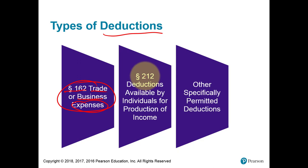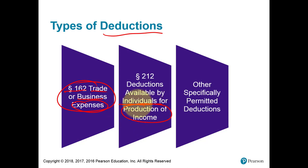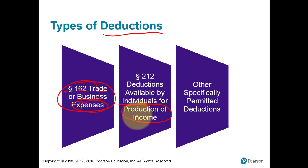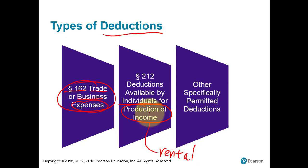The second group under a different Internal Revenue Code section is called deductions for the production of income, and this only applies to individuals like you and me — not corporations. The main category here would be for rental operations: being a landlord, and the costs you incur in running your rental units will be deducted under this section.